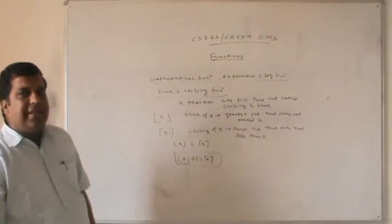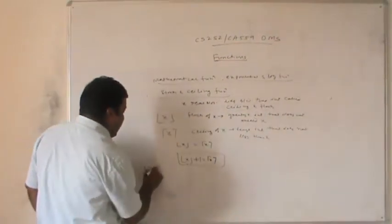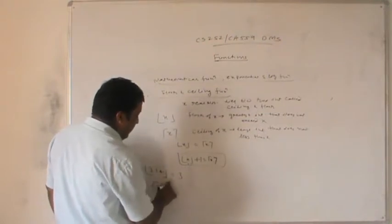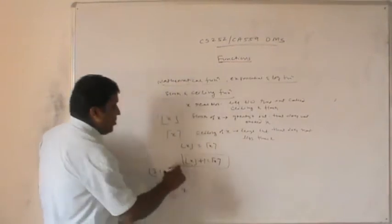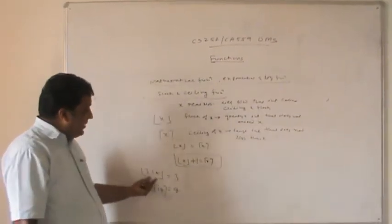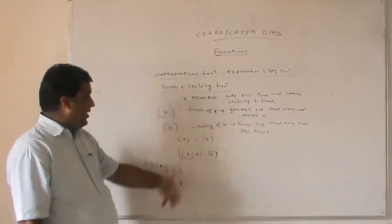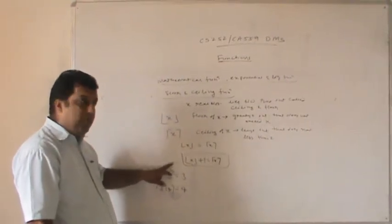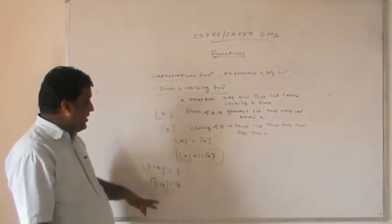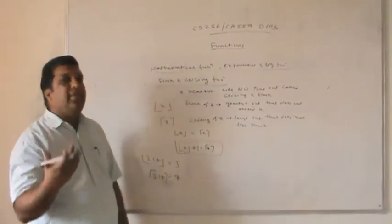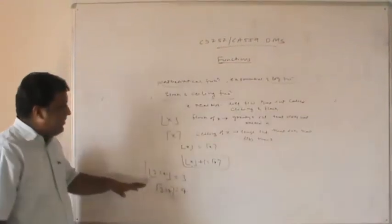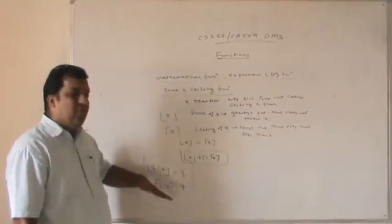We use floor and ceiling values in complex mathematical calculations. Floor of x is the greatest integer that does not exceed x — for 3.14, it is 3. Ceiling of x is the least integer not less than x — for 3.14, it is 4. In general, floor gives the lower end value and ceiling gives the upper end value.